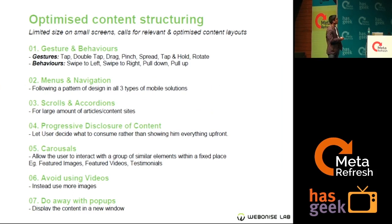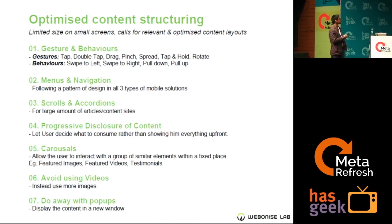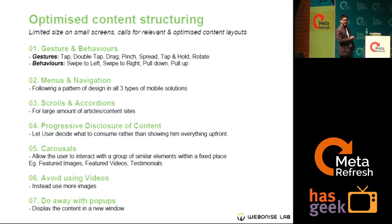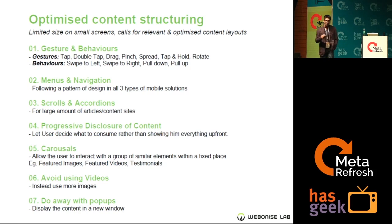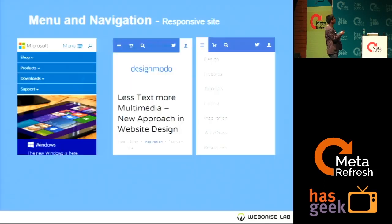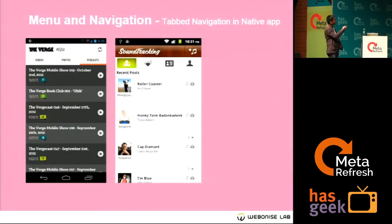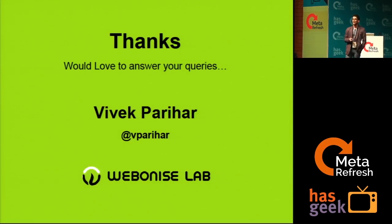The second part is optimized content structuring. Focus on relevant, optimized content layout. Understand gesture behaviors, manual navigation, scrolls, and accordions. Use progressive disclosure of content and carousels. Avoid using heavy videos in mobile apps, and do away with pop-ups entirely when building for mobile. These patterns — carousels, menu navigation, tabs, scrolls, and accordions — are the key interaction behaviors.